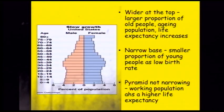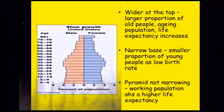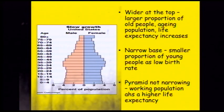Moving across to the United States, we can see it's much wider at the top, meaning we've got an ageing population and life expectancy is starting to increase — possibly because healthcare has improved. There's a narrow base suggesting a smaller young population and a low birth rate. The pyramid is not narrowing, which means the working population is larger and there is a higher life expectancy.